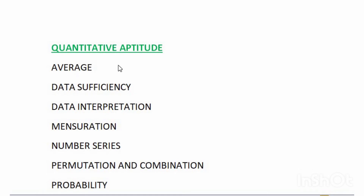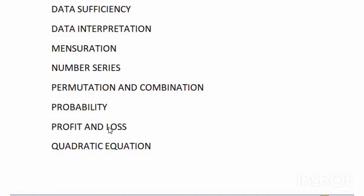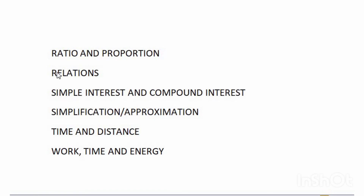The Quantitative Aptitude section covers average, data sufficiency, data interpretation, mensuration, number series, permutation and combination, probability, profit and loss, quadratic equation, ratio and proportion, relations, simple interest and compound interest, simplification or approximation, and time, distance, and work.